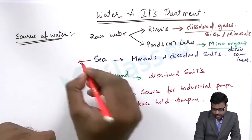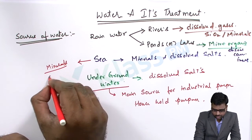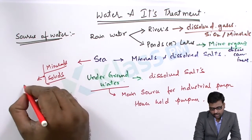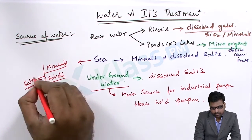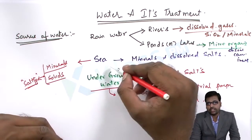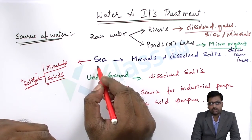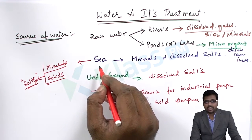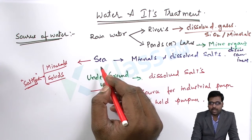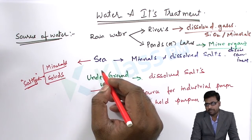Seawater contains most of the minerals and dissolved solids, which makes it salty. In countries where water scarcity exists, those countries purely depend on seawater and use the process of reverse osmosis. Desalination is a technique whose main principle is reverse osmosis, which we will come across in later stages of these methods.